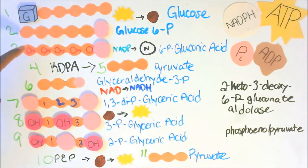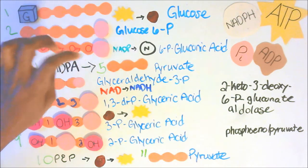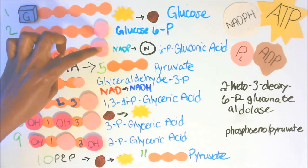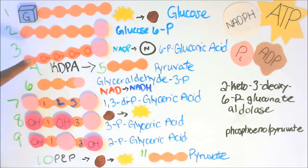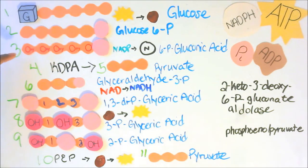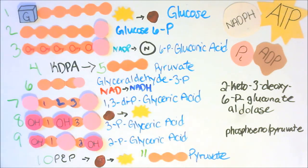6P gluconic acid has 6 carbons, with a phosphate group on the 6-carbon, and each carbon has an OH group attached to it. To help remember 6P gluconic acid, note those multiple OH groups across all carbons. Our fourth molecule involves gluconate aldolase — that is KDPG.